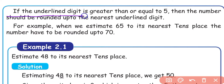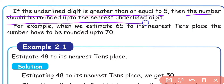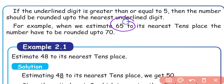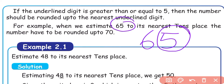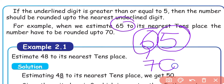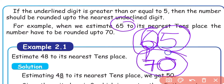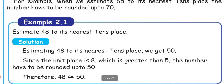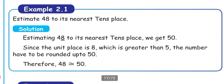If the underlined digit is greater than or equal to 5, then the number should be rounded up to the nearest tens place. For example, 65 — the ones place is 5. Since 5 equals 5, round up: 6 tens becomes 7 tens, so 65 rounded to the nearest tens place is 70.